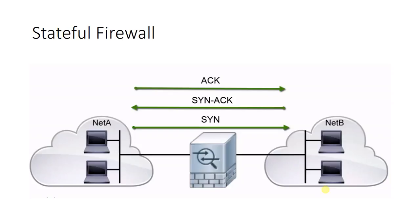Finally, the client will send an ACK back to the server to acknowledge the server's initial sequence number. As data is sent, the sequence number increments according to the amount of data sent. The TCP three-way handshake is explained in further detail in a separate video linked in the description.